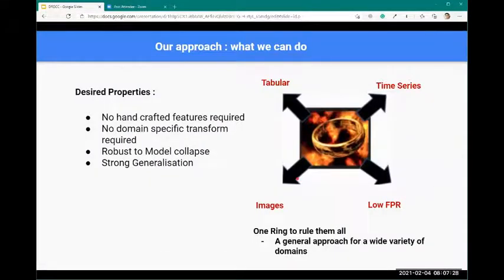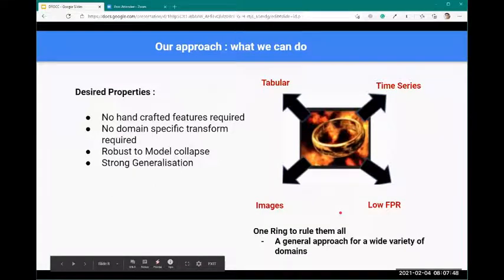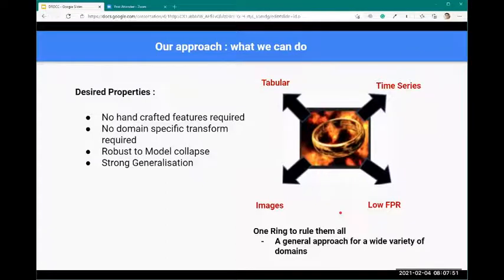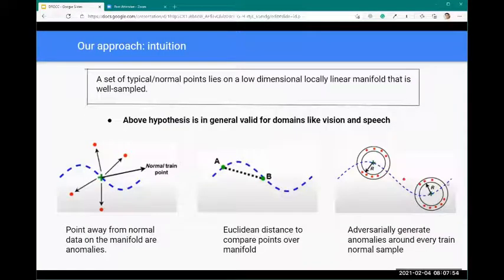The approach of this paper is to not use any handcrafted features, no domain-specific transformation. The model should be robust to model collapse, have strong generalization, and be applied to tabular time series and images with very low false positive rate. These are the targets it is trying to achieve.